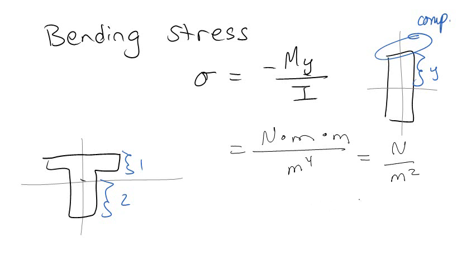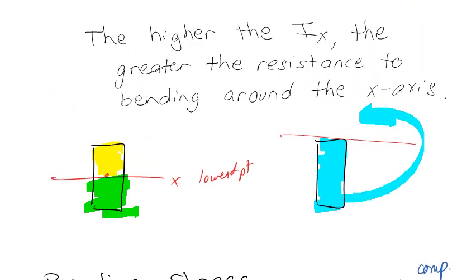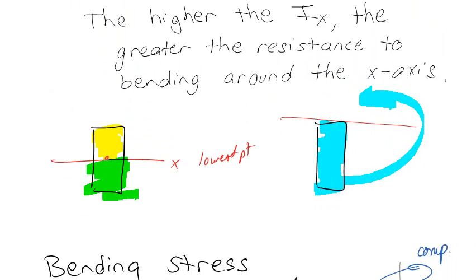The greater that I is, the smaller that stress number is going to be, because you're dividing by a bigger and bigger number. So the bigger your I, the smaller the total stress — the more resistance the beam has to bending. Conversely, the smaller the I, the bigger the stress. That's why you have that inverse relationship.